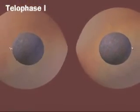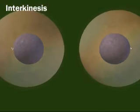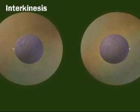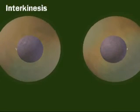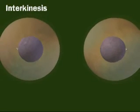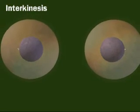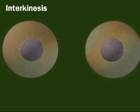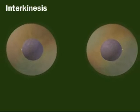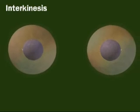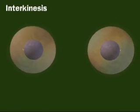Following telophase I, there may be an interphase called interkinesis. The third key point about meiosis is that there is no S phase — no DNA replication — in interkinesis.